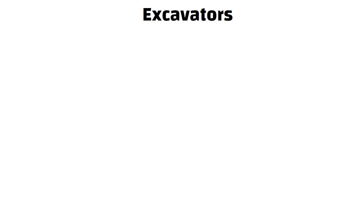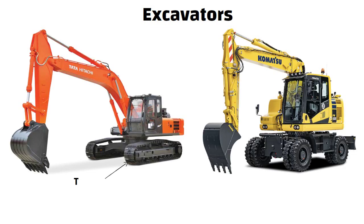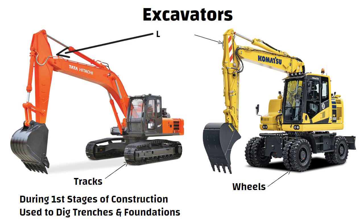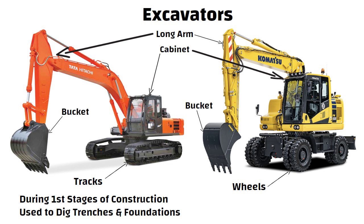Excavators are available with either tracks or wheels. They are usually found during the first stages of construction as they are used to dig trenches and foundations. Excavators contain a long arm and a cabinet. At the end of the long arm, a digging bucket is provided, and the cabinet is the place for the machine operator. The whole cabin arrangement can rotate up to 360 degrees, which eases the operation.